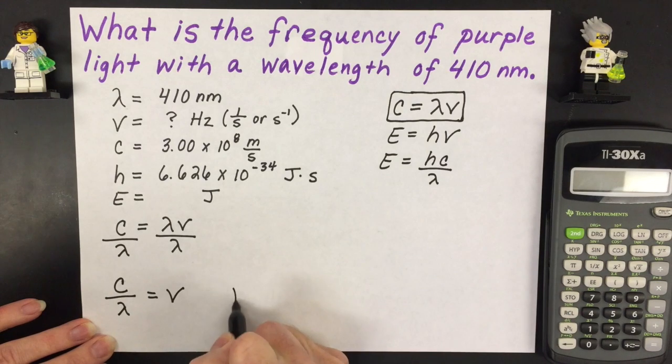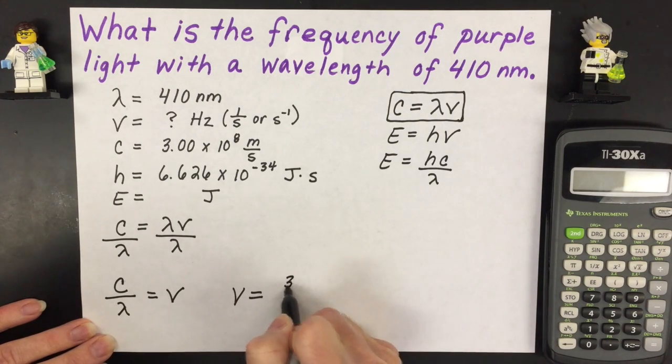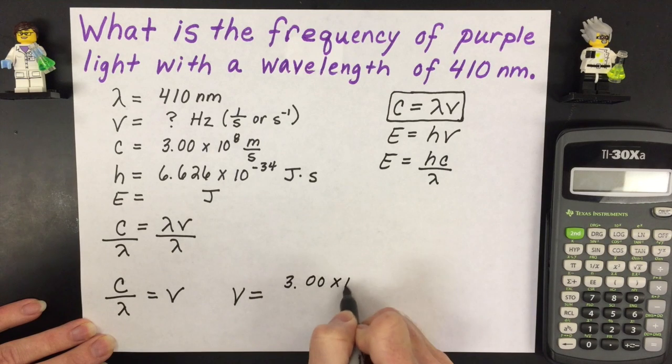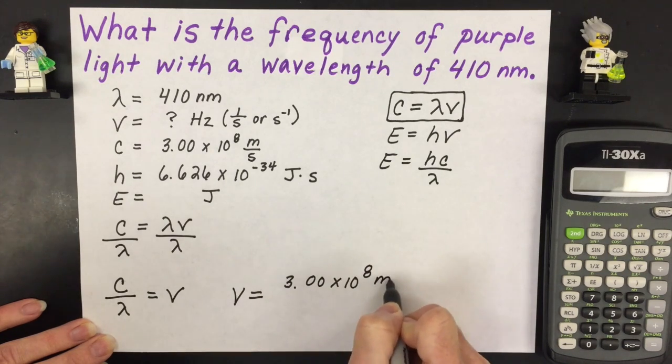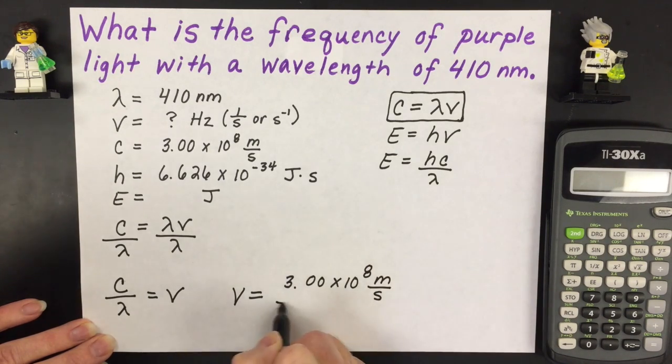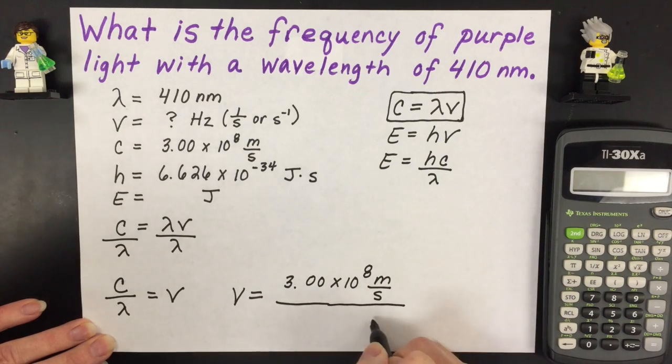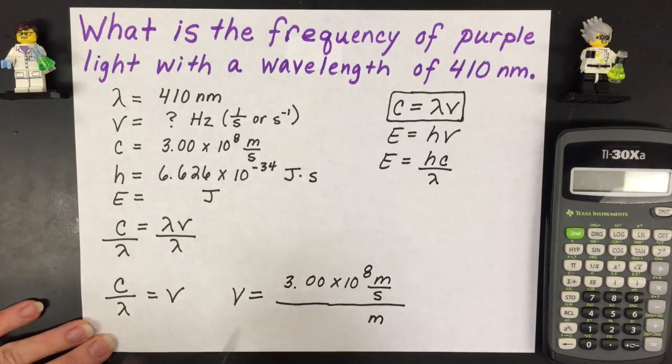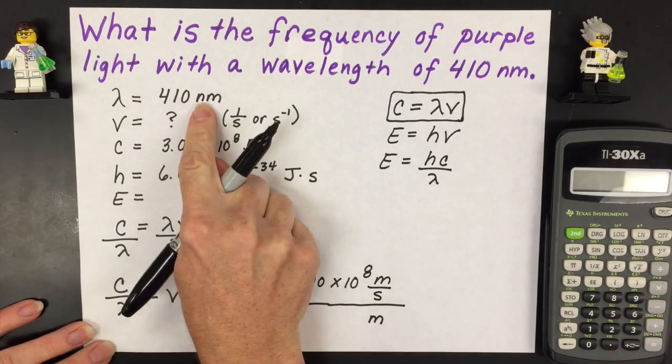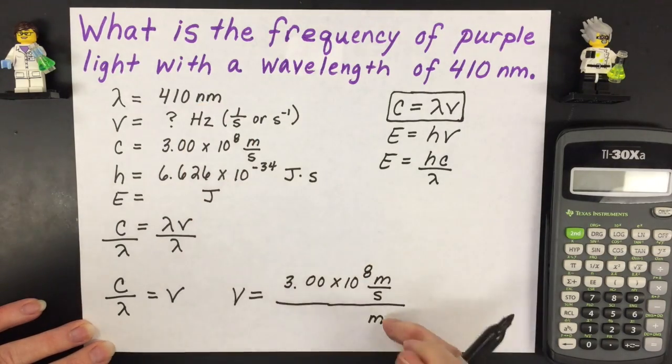So I'm ready to plug my numbers in however I have one issue. If I put in the speed of light on the top which is 3 times 10 to the 8th meters per second, on the bottom I need my unit down here to be in meters and currently right now I have nanometers. So I have to convert from nanometers to meters.